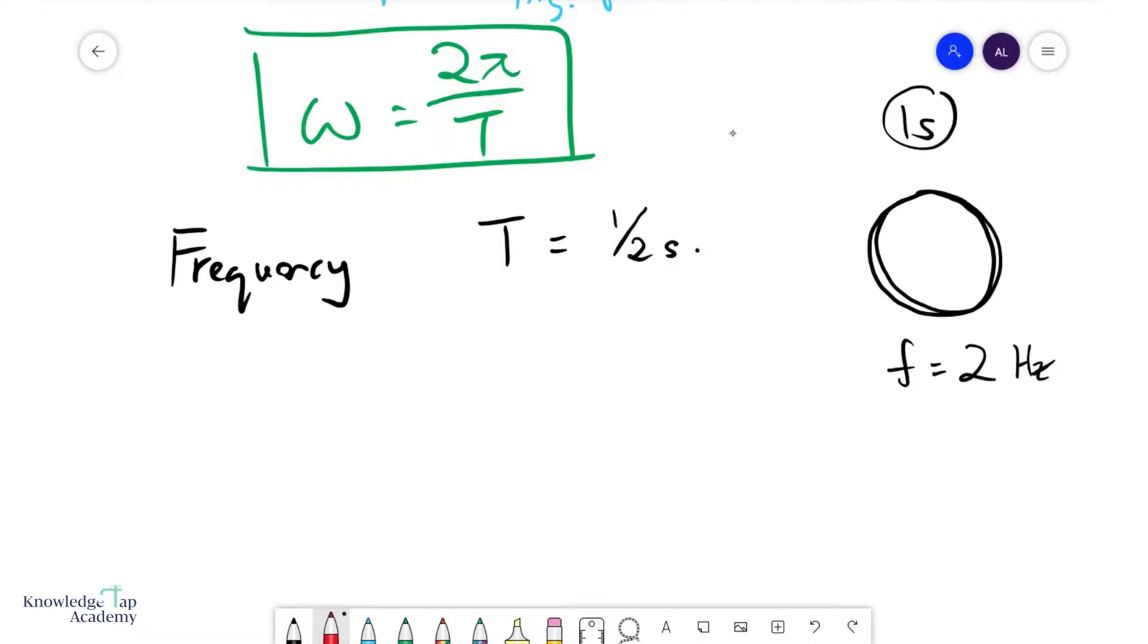And so we can see that there is a nice little relationship between frequency and period, and that is the frequency is simply 1 over T. Go ahead and try, right?